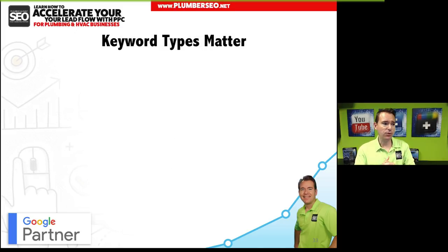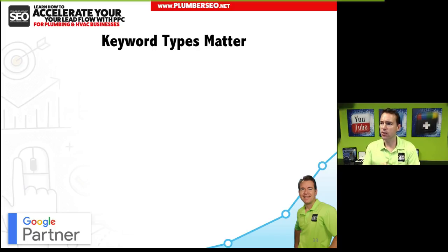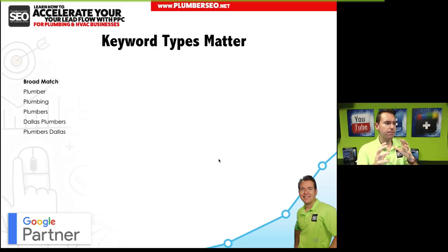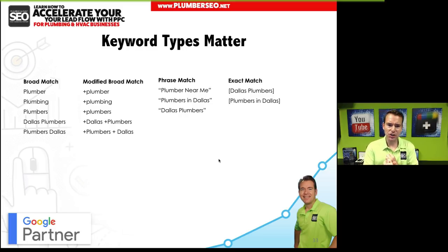Those are the campaigns we find to work best. If you'd like, post in the comments and I can send you these slides so you have them broken down and can compare your current campaign. Now, keyword types matter — there are four different match types: broad match, modified broad match, phrase match, and exact match.